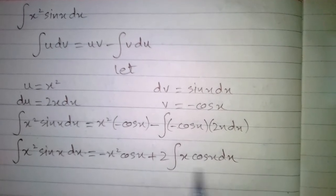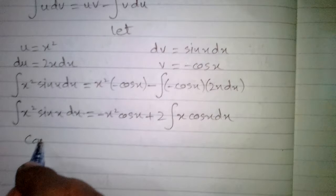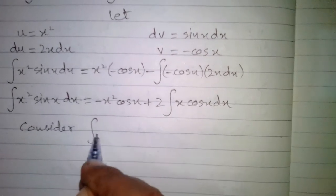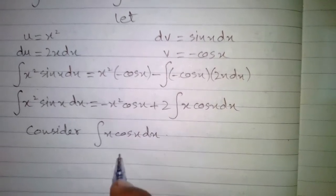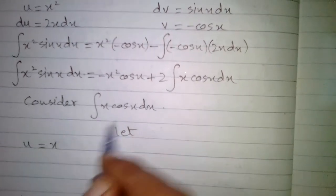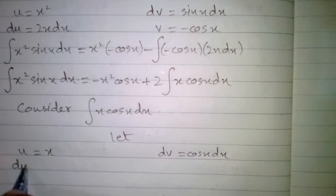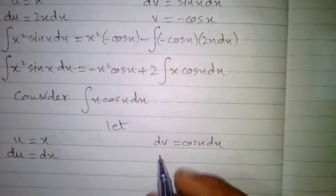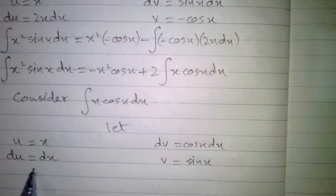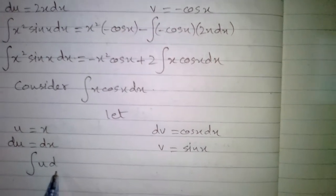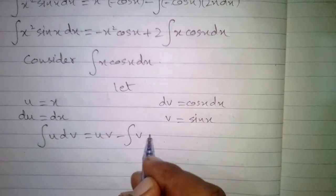Now we have an integral containing two types of functions, so we apply integration by parts again. For the integral of x cos x with respect to x, we suppose u equals x and dv equals cos x dx. The differential du equals dx, and v equals the integral of cos x, which is sin x. The formula remains: integral of u dv equals uv minus integral of v du.